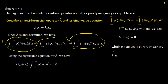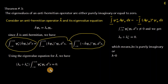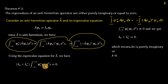Substituting the eigenvalue equation and bringing terms to the left side, we obtain (λ_n + λ_n*) ∫ psi_n* psi_n dr = 0. Since the wavefunction is normalized, the probability integral equals 1, which is not zero. Therefore (λ_n + λ_n*) must equal zero, which is possible only when λ_n is purely imaginary.